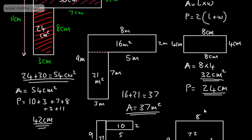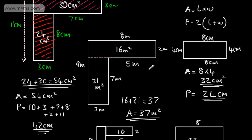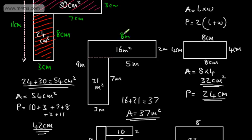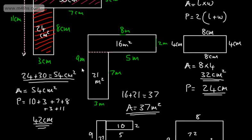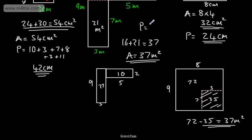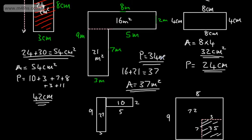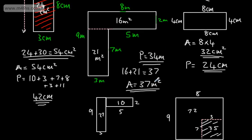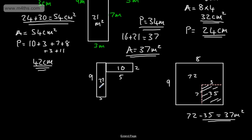For the perimeter, we add all the lengths: 8 plus 2 is 10, plus 5 is 15, plus 7 is 22, plus 3 is 25, plus 9 is 34. So the perimeter is 34 metres. Area is metres squared, and perimeter is in metres.